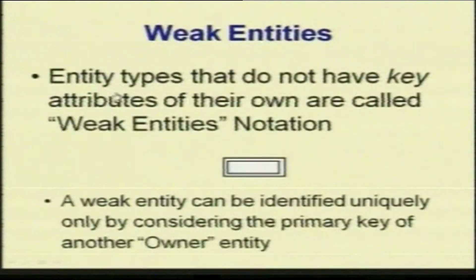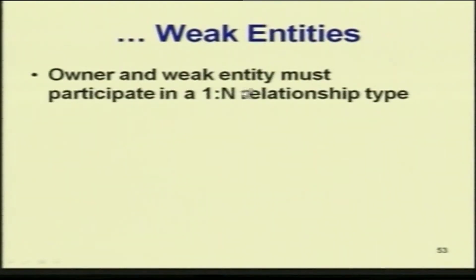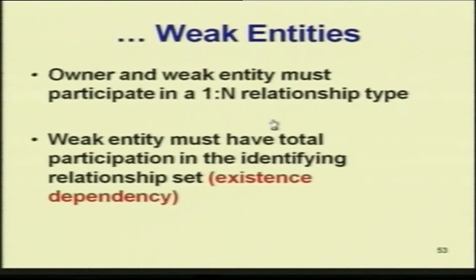Weak entities are represented by two rectangles — recall that regular entities are represented by a single rectangle. A weak entity can be identified uniquely only by considering the primary key of the owner entity — the strong entity on which it depends. The owner and a weak entity must participate in a one-to-many relationship type, and the weak entity must have total participation in the identifying relationship, meaning it should have an existence dependency.